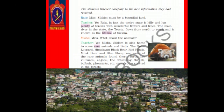Misha: Miss, what about the animals? Teacher: Yes Misha, Sikkim is also home to some rare animals and birds. The snow leopard, Himalayan black bear, red panda, musk deer and blue sheep are some of the rare animals found there. Birds like vultures, eagles, the whistling thrush, bulbuls, pheasants etc. can also be spotted in the forests. Children, 'plenty' means many in abundance. 'Lifeline' means something on which you depend very much. 'Rare' means unusual, not commonly found everywhere.